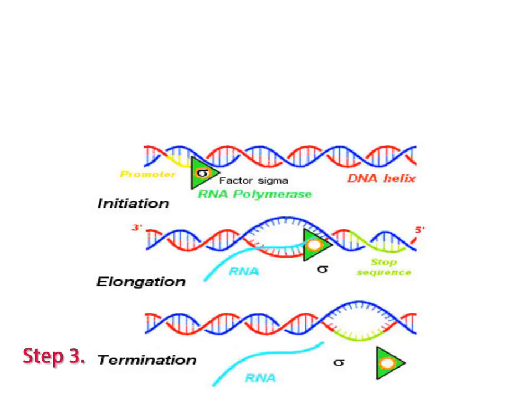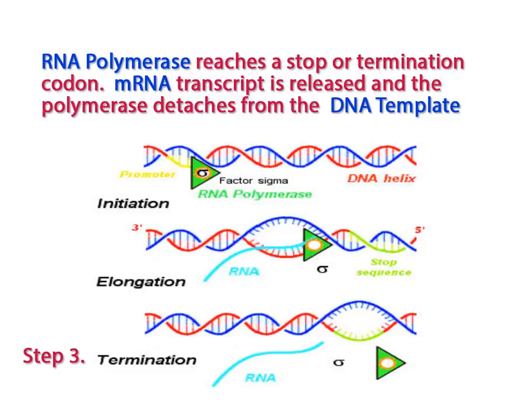Termination occurs when the RNA polymerase reaches the terminator region, or the end of the gene. The mRNA transcript is released and the polymerase detaches from the DNA template.